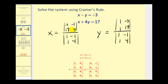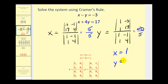Let's go ahead and evaluate these determinants. Here we'll have negative twelve minus negative seventeen, which becomes negative twelve plus seventeen — that's five. The denominator will be four minus negative one, or four plus one — that's five. And remember the denominators are the same, so this will also be five. The numerator for the y value will be seventeen minus negative three, or seventeen plus three — that'll be twenty. So the solution to the system will be x equals one and y equals four.